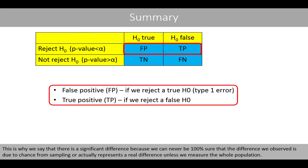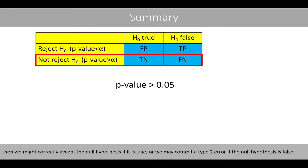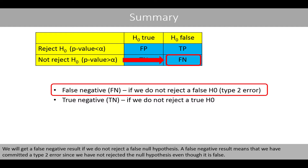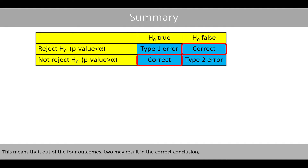This is why we say that there is a significant difference, because we can never be 100% sure that the difference we have observed is due to chance from sampling or actually represents a real difference, unless we measure the whole population. If the p-value is greater than the significance level of 0.05, then we might correctly accept the null hypothesis if it is true, or we might commit a type 2 error if the null hypothesis is false. We get a false negative result if we do not reject a false null hypothesis, and a true negative result if we do not reject a true null hypothesis. Out of the four outcomes, two may result in the correct conclusion, whereas two may result in either a type 1 or type 2 error.